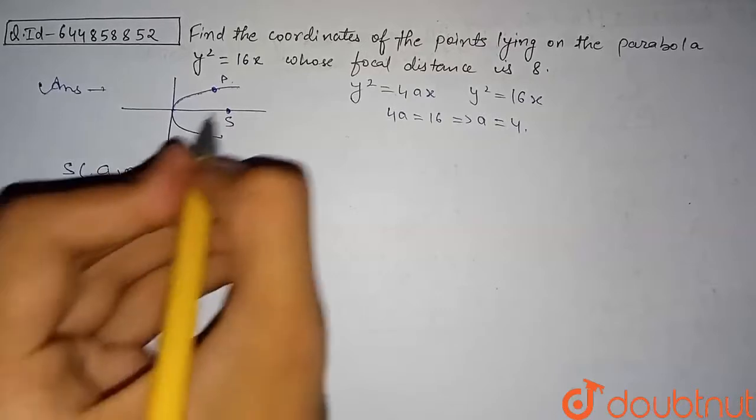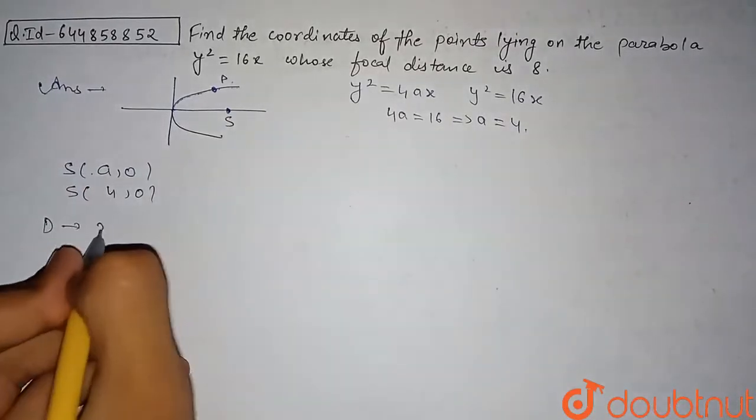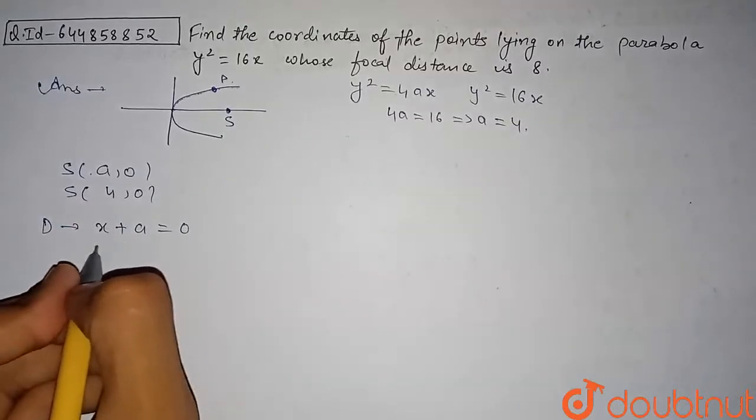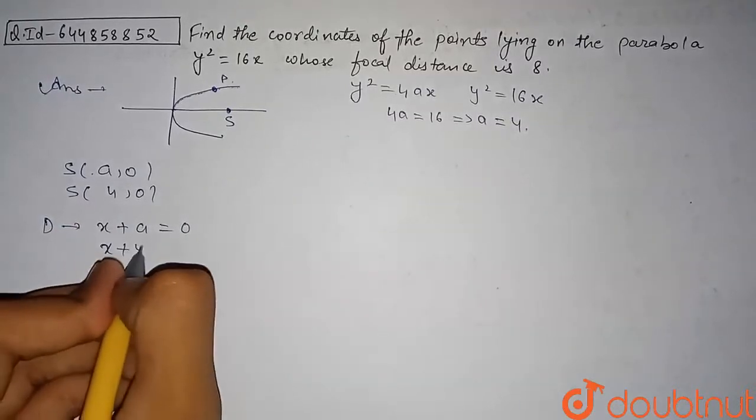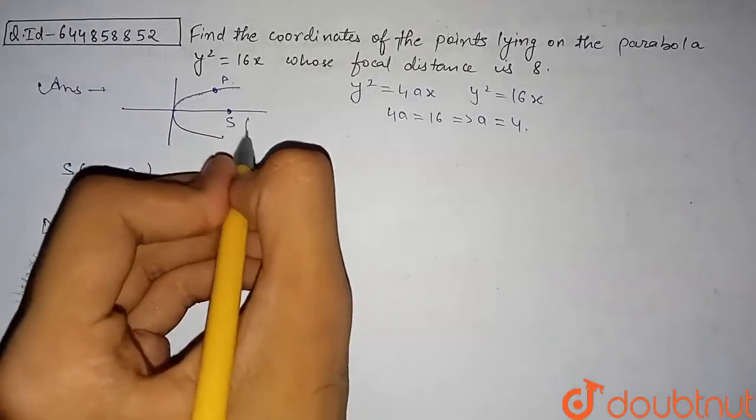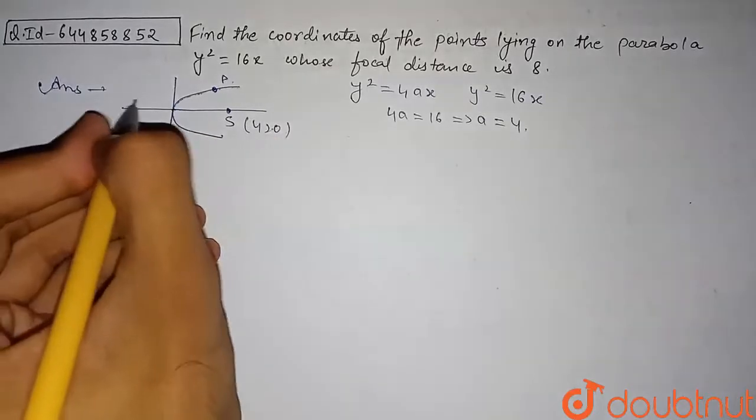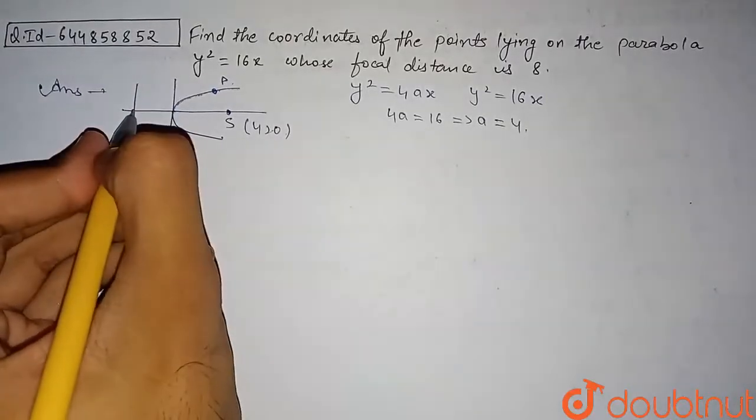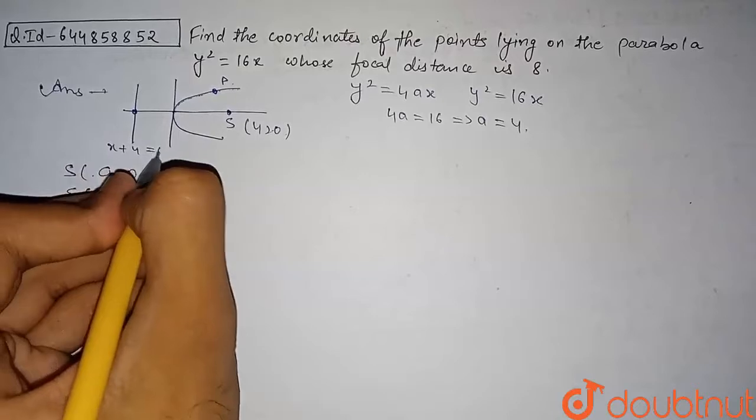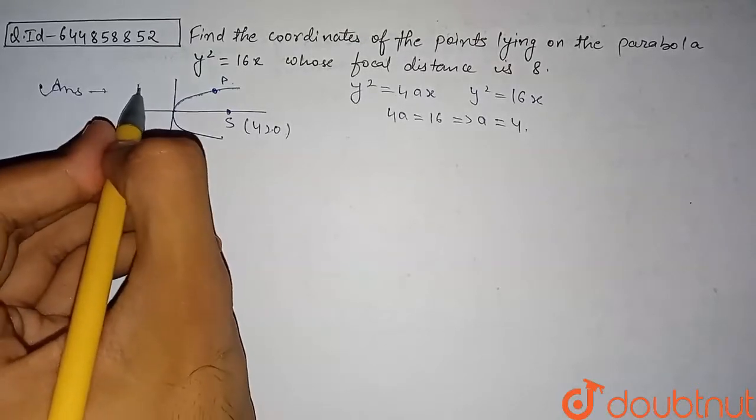The equation of directrix for the standard parabola is x + a = 0. For our given parabola, this is x + 4 = 0. The focus has coordinate (4, 0) and the directrix is x + 4 = 0. The distance of this directrix from the y-axis is 4 units.